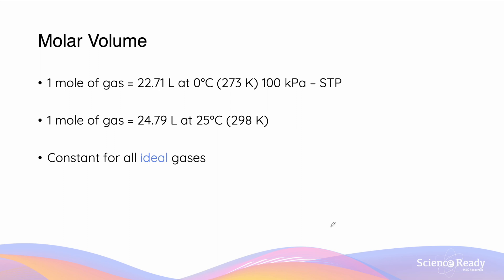Molar volume is the volume of 1 mole of gas at STP, which is 0 celsius and 100 kilopascals, which equals to 22.7 liters. The same is for RTP, which is at 25 degrees celsius, and that equals to 24.79 liters. These are all constants for ideal gases, meaning that all gases will have this particular volume for 1 mole, and this is what we refer to as Avogadro's law. Don't worry about memorizing these values, they will also be given to you in the datasheet.